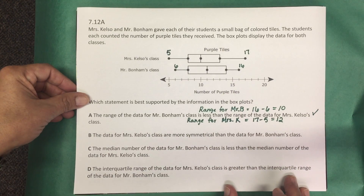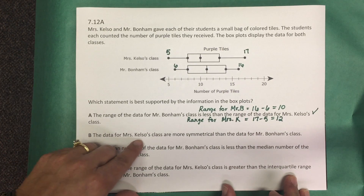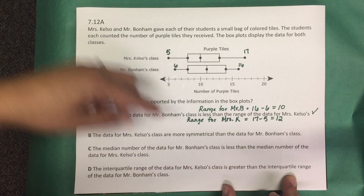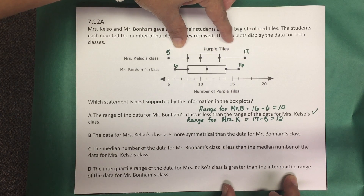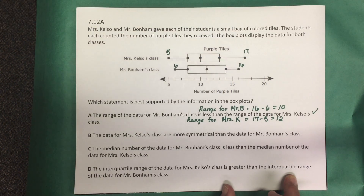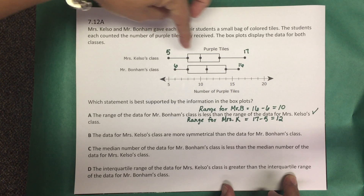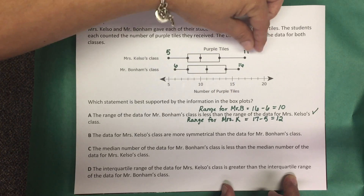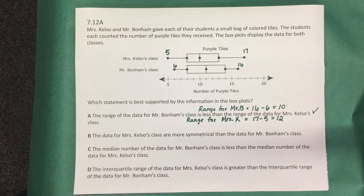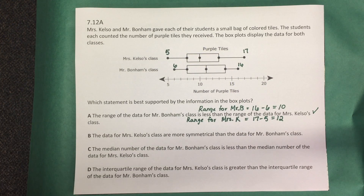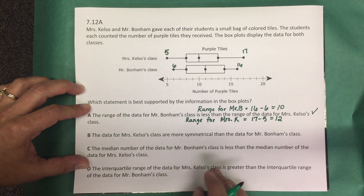Answer choice B says the data for Mrs. Kelso's class are more symmetrical than the data for Mr. Bonham's class. Looking at Mrs. Kelso's distribution, her data appears slightly skewed to the right with a longer tail to the right. Mr. Bonham's data, on the other hand, looks pretty symmetric. So the statement that Mrs. Kelso's data is more symmetrical than Mr. Bonham's is not correct.